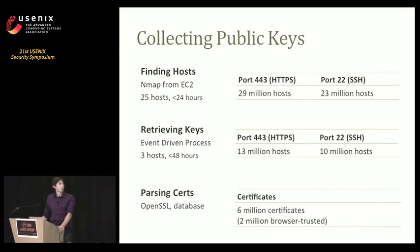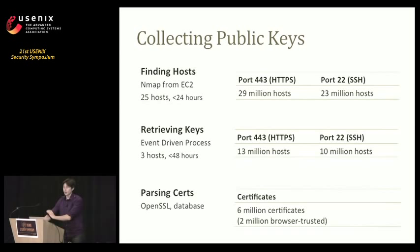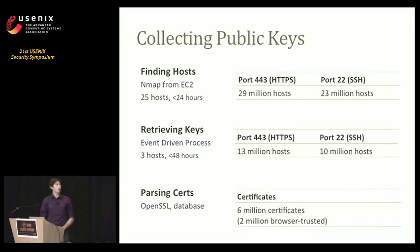We performed this scan first by finding hosts with port 443 or 22 open, running NMAP in a distributed manner across 25 EC2 hosts. We were able to scan the entire IPv4 address space in approximately 24 hours. We then performed an SSH or TLS handshake with each host in an event-driven manner, in Python or C with Twisted or LibEvent. In approximately 48 hours, we pulled down and processed all TLS certificates and SSH keys we could find on the internet.